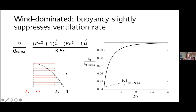What happens if we add just a little bit of a temperature difference, while still wind-dominated (Froude number still greater than one) with a bit of buoyancy? The buoyancy very slightly suppresses the ventilation rate. Looking at the velocity profiles: the red profile is wind-only (idealized constant velocity through the window), and as we increase the temperature difference, the warm room air wants to flow out of the top of the window, causing a distortion of the velocity profile — almost moving towards what you'd see for an exchange profile.